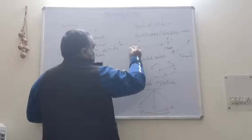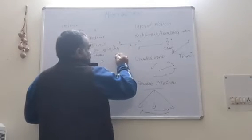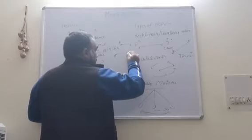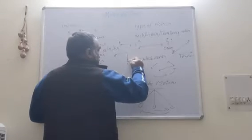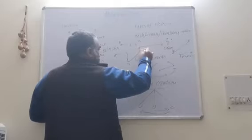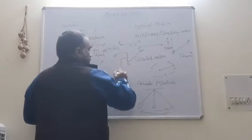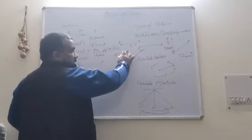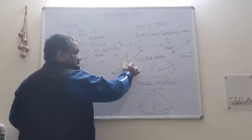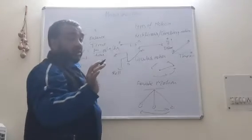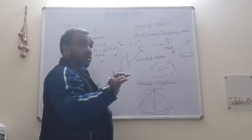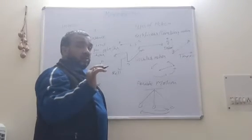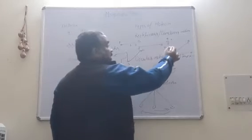If an object starts from A, changes direction at B, and after B point it goes to C, it will never be rectilinear motion. As you see, it changed the direction as it came to B. So we can say that in rectilinear motion, the object will never change the direction.